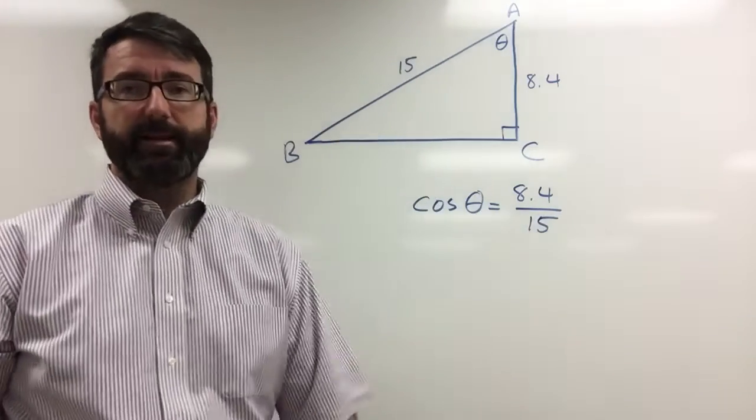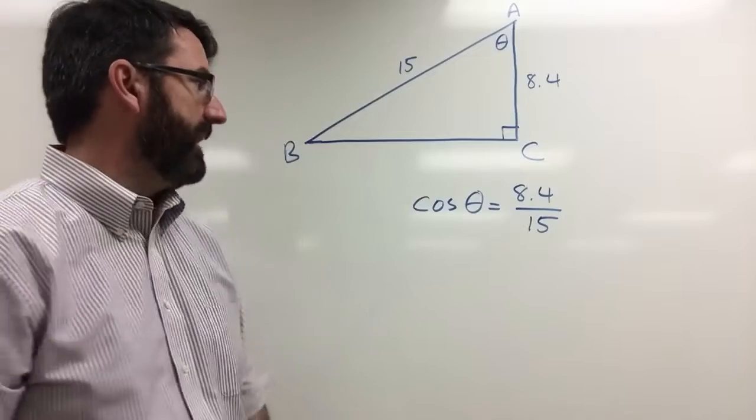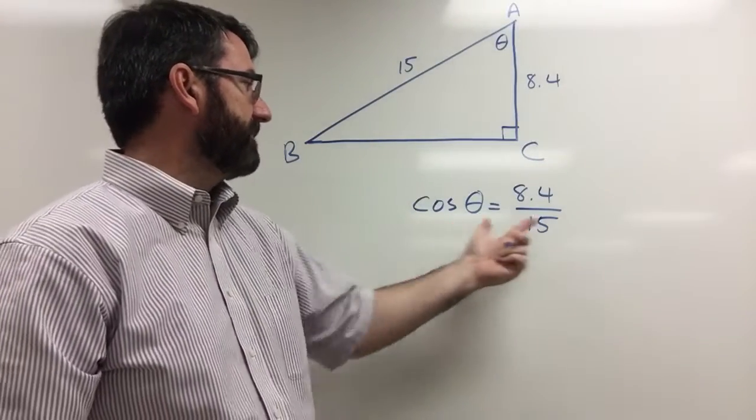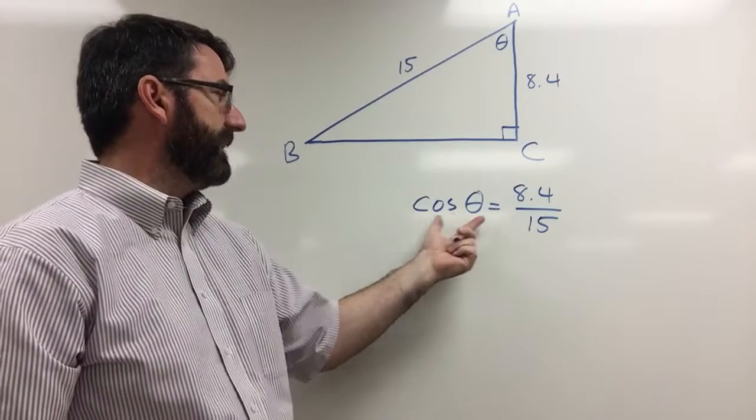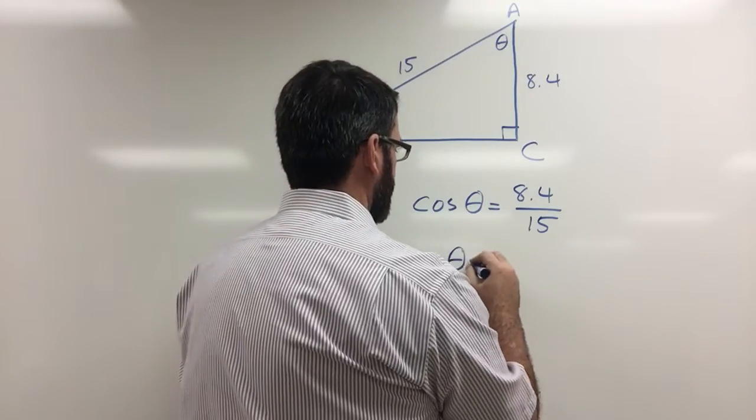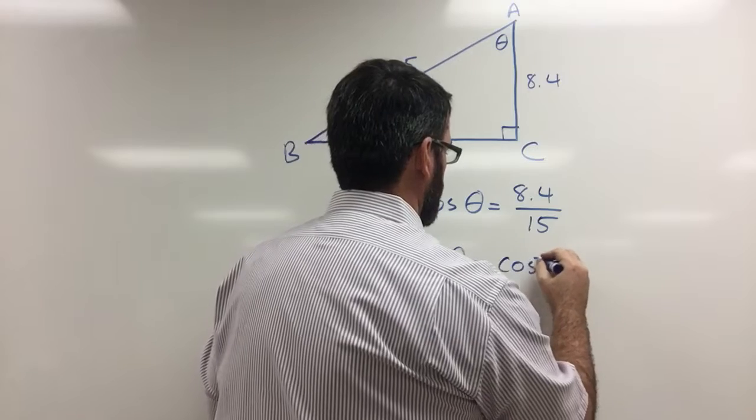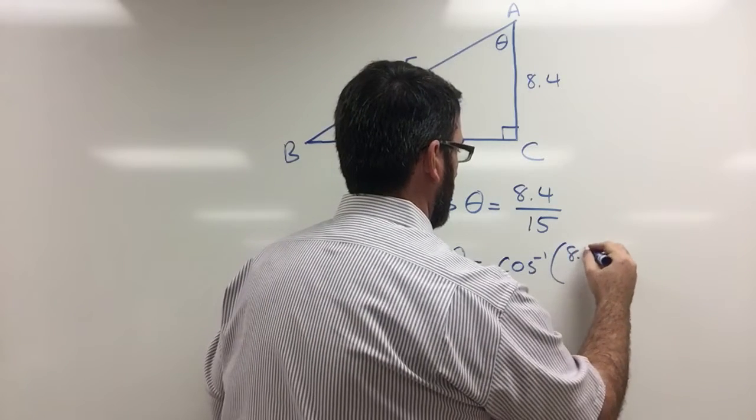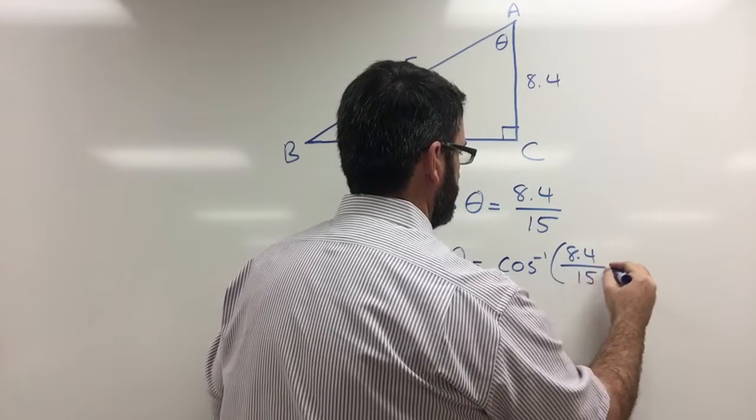Now we just need to solve for theta. In order to solve for theta we need to take the inverse cosine of both sides. So that's going to give us theta is equal to the inverse cosine of 8.4 divided by 15.